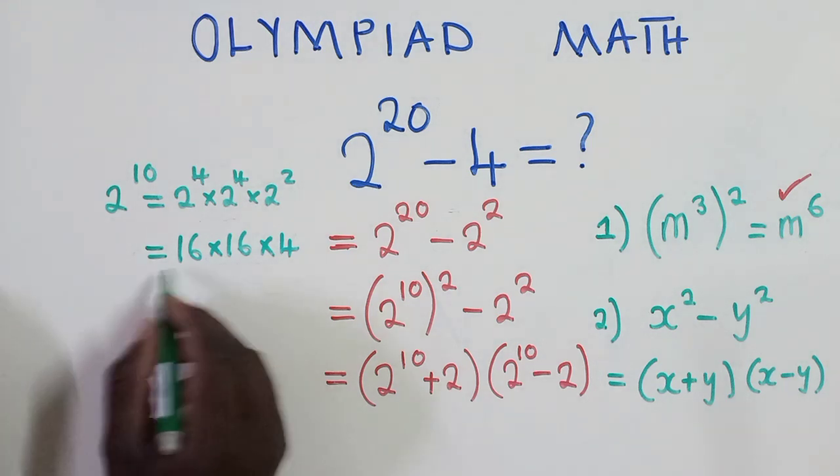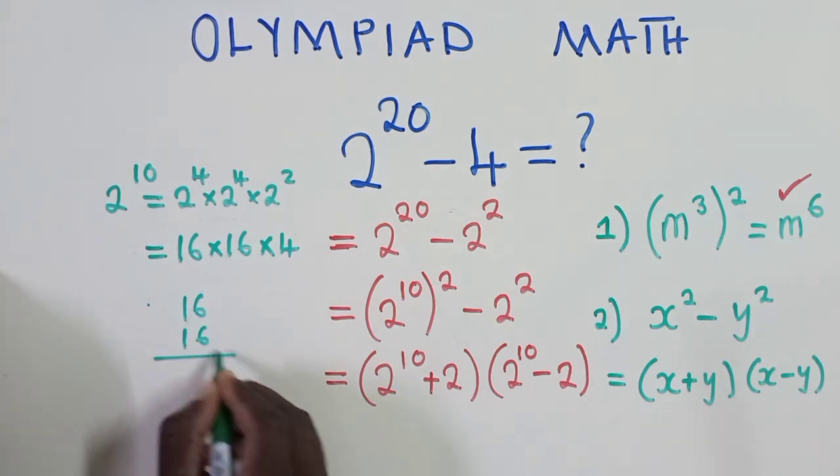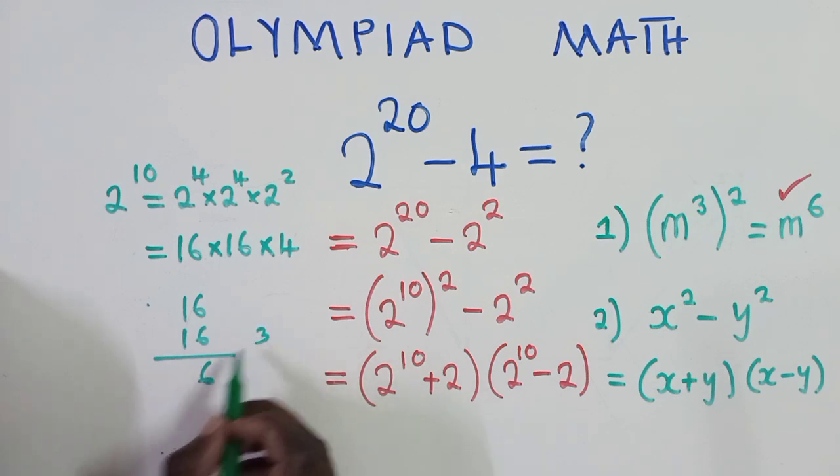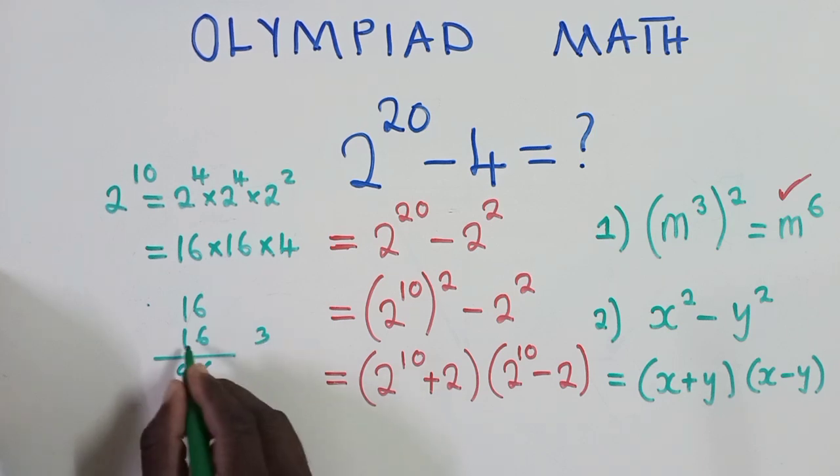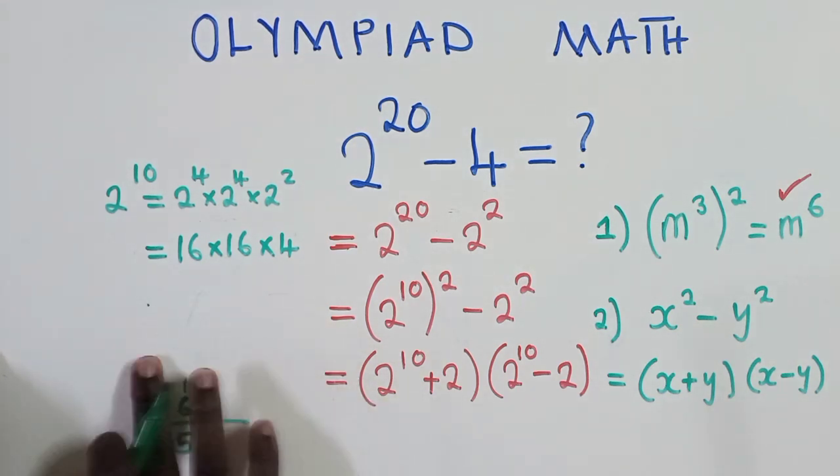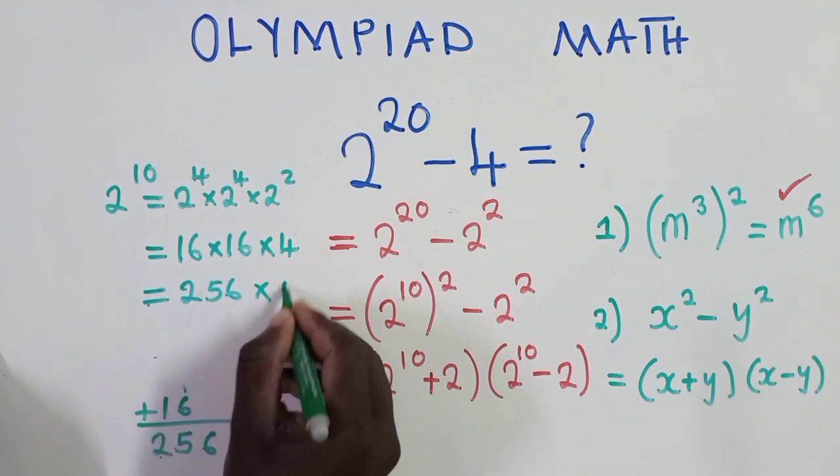So now how do we work out with what we have here? We're going to say 2 to the power 4 is 16 times 16 times a 4 there. So the next thing here now will be to simplify this. So we shall have 16 times 16. 6 times 6 it's the 6 so we shall have a 6 and a 3 there. 6 times 1 it's 6 plus 3, 9 here we're getting a 6 and a 1 there. When we add this we are simply getting 256.